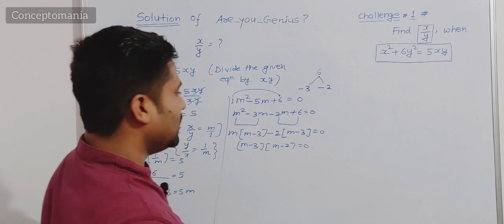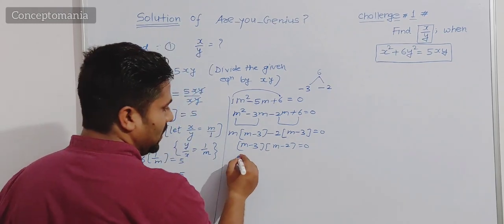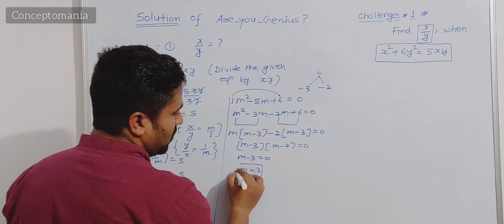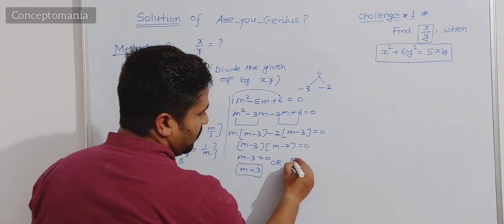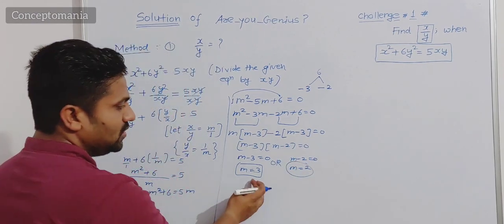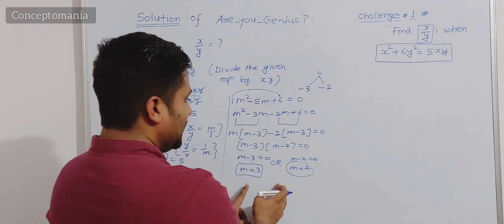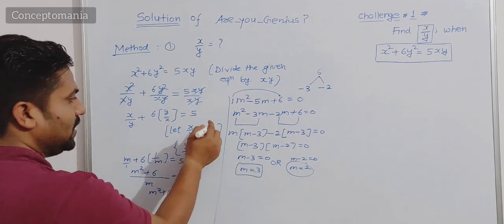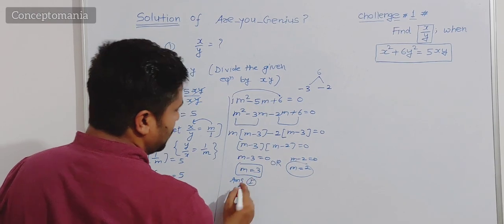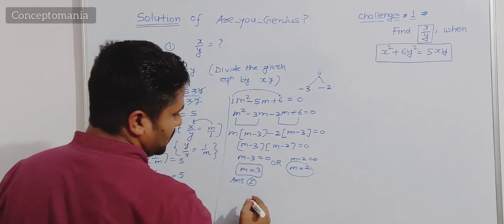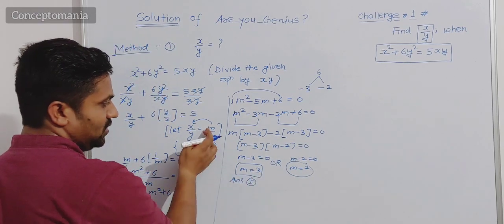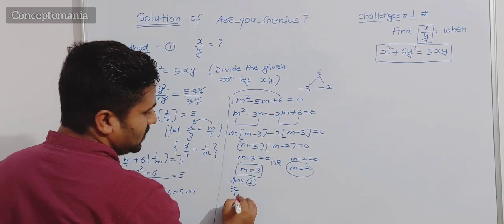So either m minus 3 equals zero, giving m equals 3, or m minus 2 equals zero, giving m equals 2. These are the two possible values of m. Since m is equal to x upon y, if m equals 3 then x upon y equals 3 by 1, meaning x is to y is 3 is to 1.